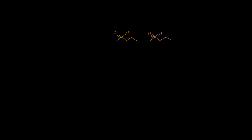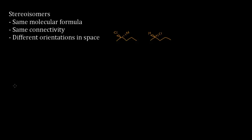Let's say you're given these two compounds and you have to figure out if they're stereoisomers or not. We look at our list of criteria — it needs to have the same molecular formula. Counting here: 1, 2, 3, 4, 5 carbons, one chlorine, and with the hidden hydrogens that's 11 hydrogens. So the formula for this compound is C5H11Cl.